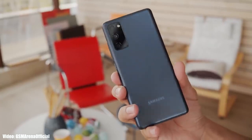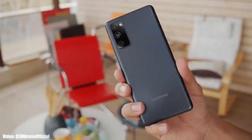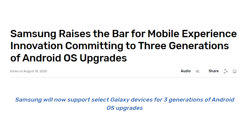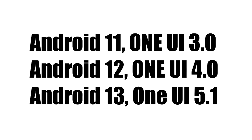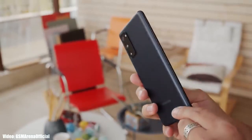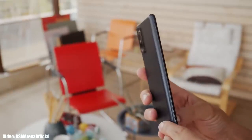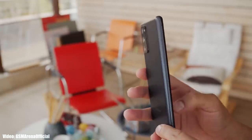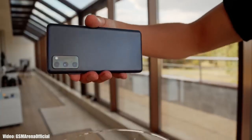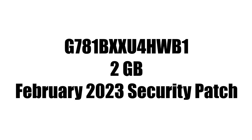This could be the last One UI update that this smartphone will get, because it falls under Samsung's three-year software update policy and it has already been updated three times. There are high chances that Samsung will discontinue the S20 FE this year. But for now, the One UI 5.1 update is out for the S20 FE.